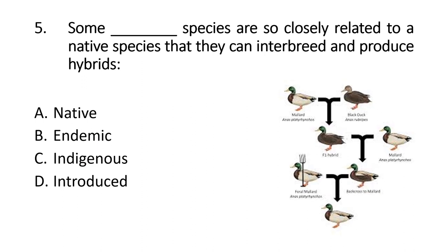Question 5: Some exotic species are so closely related to a native species that they can interbreed and produce hybrids. This is the hybridization phenomenon — when an invasive species introduced into a local area resembles the local species closely enough that they can interbreed.